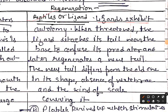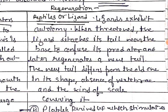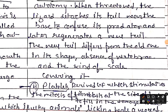Looking at the lizard specifically, the lizard exhibits autotomy. When threatened, the lizard detaches its tail near the base to confuse its predator and later regenerates a new tail. The new tail differs from the old one in the absence of vertebrae and in the kind of scale covering it. So the regenerated tail in the lizard is different in structure from the original.